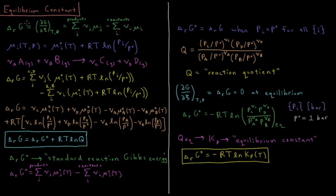Since our Gibbs energy is a state function, it just matters what the final and initial Gibbs energies are. The final Gibbs energy is the expression for the products, the initial Gibbs energy is the expression for the reactants, so final minus initial gives us our Gibbs energy change during the reaction.